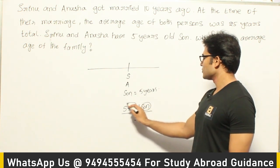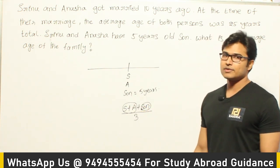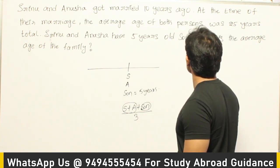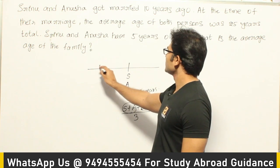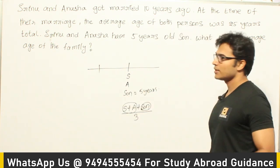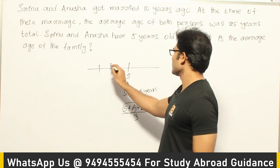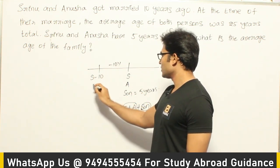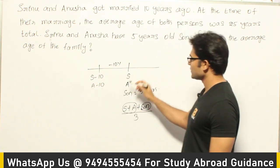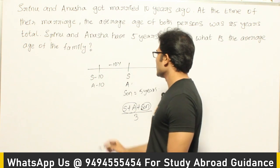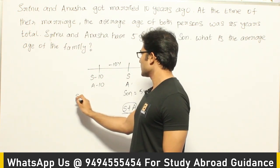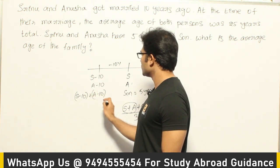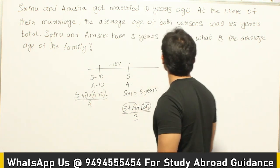To find this value, we go back 10 years — at the time of their marriage. If their present ages are S and A, then 10 years back Srinu's age would have been S minus 10 and Anusha's age A minus 10. Their average at that time was (S − 10 + A − 10) divided by 2, which equals 25.